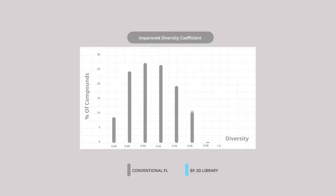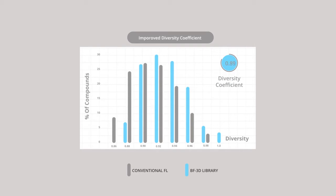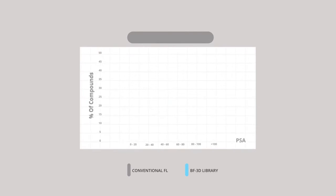And here you can see that the 3D library is more attractive in terms of diversity, with a diversity coefficient of 0.9 compared to 0.87 for the conventional library.